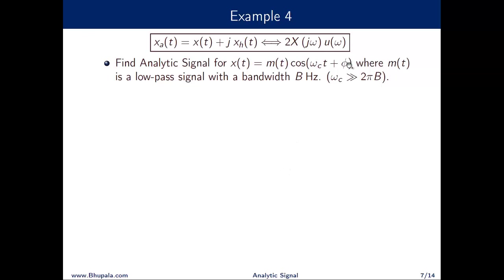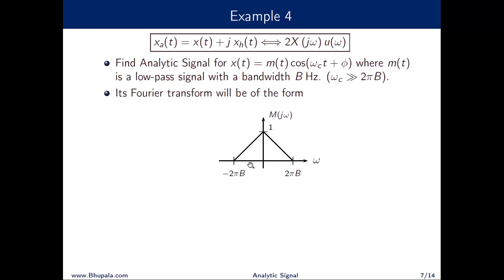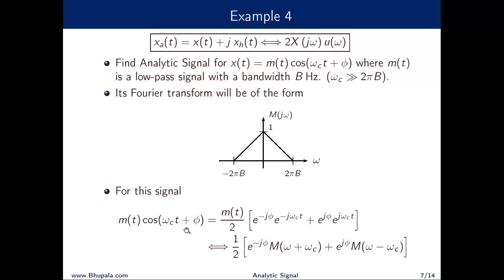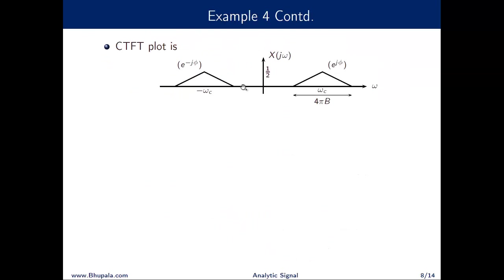As the next example, consider an amplitude modulated signal with phase in the carrier term. We assume ωc (the carrier frequency) is much larger than the bandwidth of the signal. The message signal m(t) has a Fourier transform of triangular shape for illustration. In the Fourier domain, the transform is (1/2)[e^(−jφ)·M(j(ω+ωc)) + e^(jφ)·M(j(ω−ωc))], giving two spectra centered at ±ωc scaled by e^(±jφ).